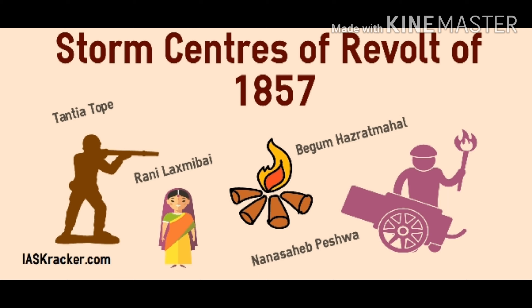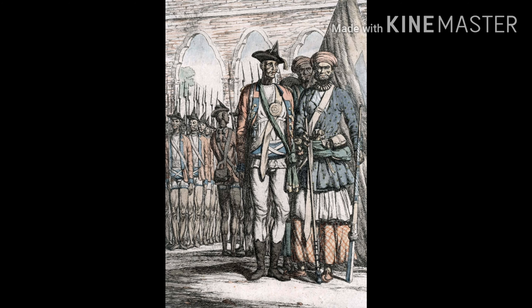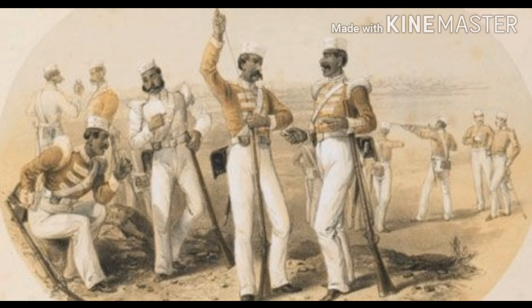Rani Lakshmi Bai, Tatya Tope, Kunwar Singh, and Bakht Khan all died in the battlefield, while Nana Sahib and Begum Hazrat Mahal escaped to Nepal. By the end of 1859, the British restored their rule and order. For them, it was as good as a reconquest of India.